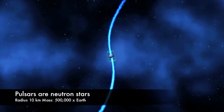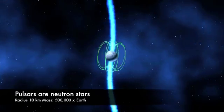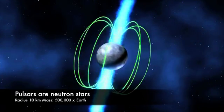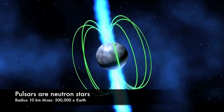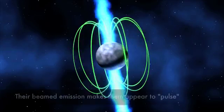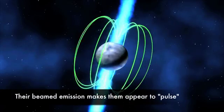Pulsars are neutron stars. They weigh about a half million times as much as the Earth but are only 20 km across. Their rotation makes them appear to pulse once per rotation period and they spin up to an amazing 700 times per second.